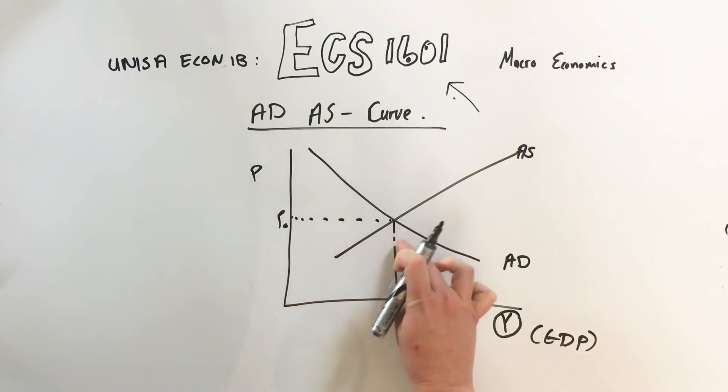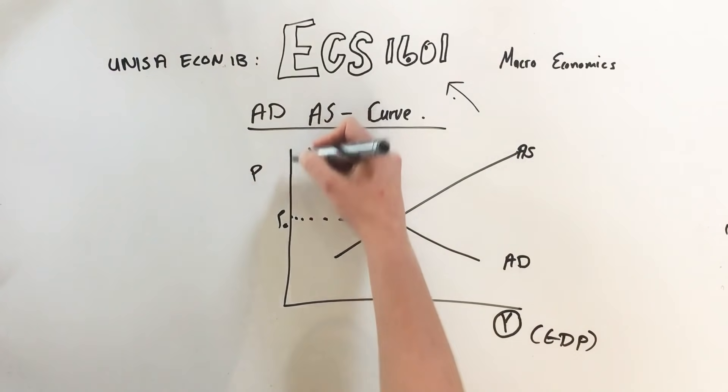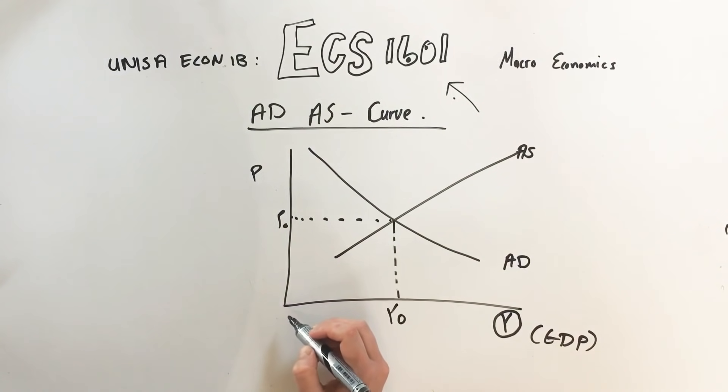Here is the price level. The price level indicates inflation, so if the price level goes up it means prices go up, so it's inflation.